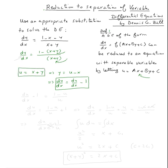Now we're going to plug them into this equation. So dy/dx, we said it's du/dx minus one, and then the right side is (1 minus u) over u.